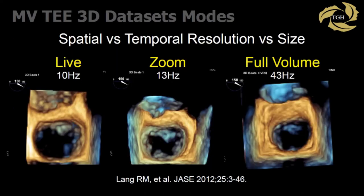As we've already heard, the acquisition of 3D data sets is really a trade-off between spatial resolution, temporal resolution, and size. Here are three mitral valve data sets — by now most people will recognize them as 3D data sets of the mitral valve. They're acquired from the same patient. How do you think they differ? Or did I just clone all the data sets?